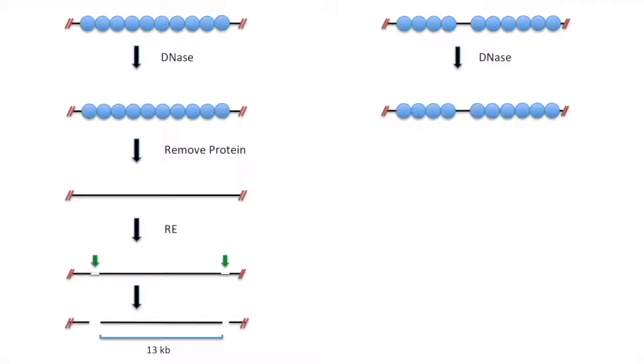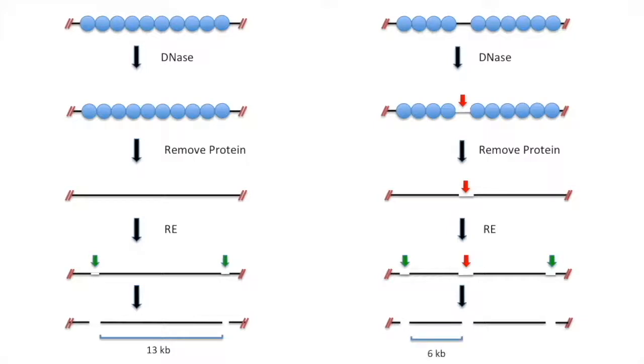We then treat this DNA with limiting DNase. However, in this case, the DNase will cut at the hypersensitive spot marked by the red arrow. When we remove the protein and treat with restriction enzymes, this leaves us with two fragments: 6 kb and 7 kb.